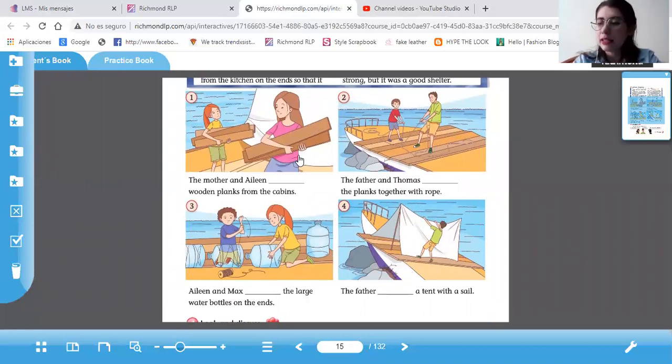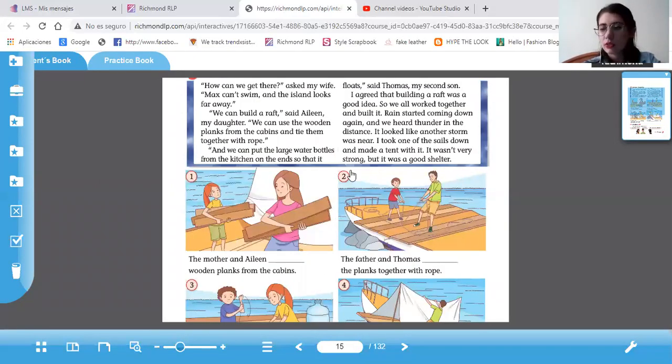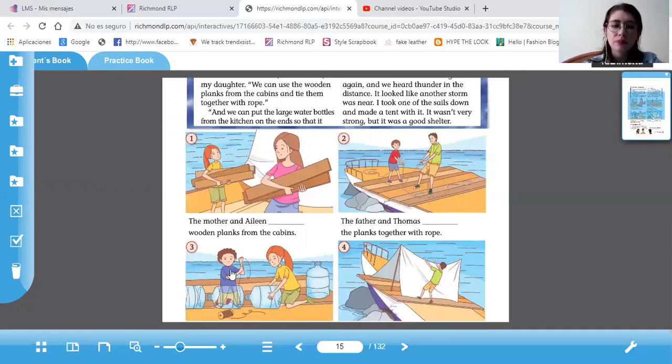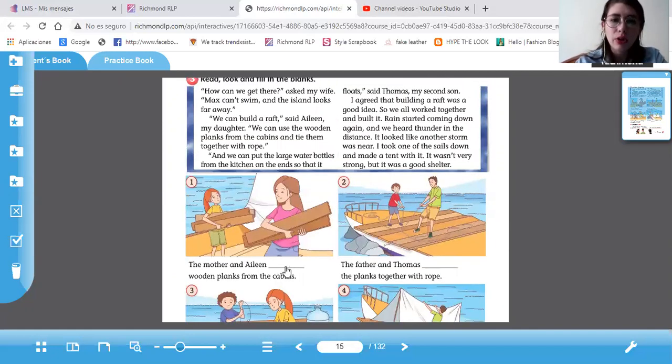Okay? So this is the way the family build the raft. Hicieron una balsa, porque su bote se pues chocó, miren, se quebró. Hicieron una balsa con los pedazos de madera que encontraron y vamos a completar entonces estas oraciones con los verbos. Bueno, la historia es tan pasada. Vamos a buscar partes de estas oraciones para encontrar qué verbos vamos a escribir aquí.